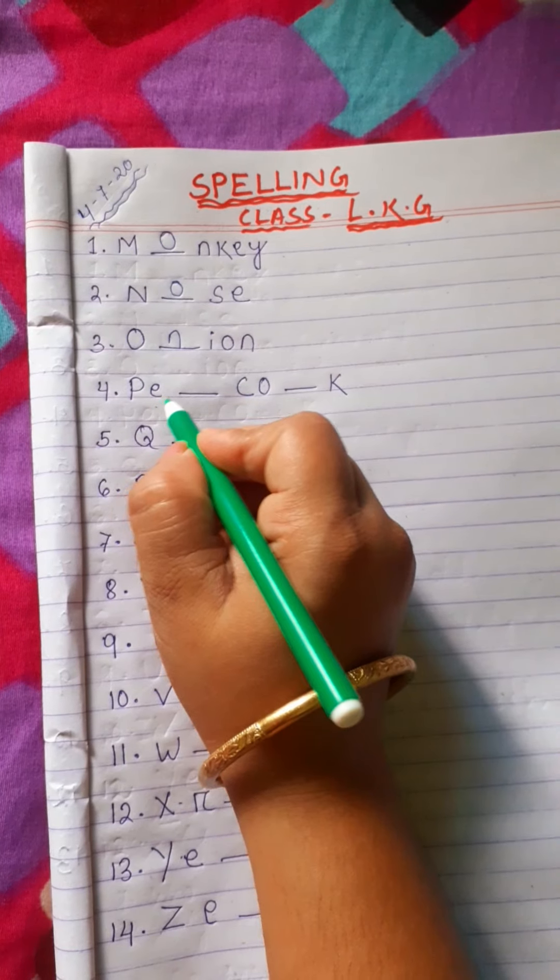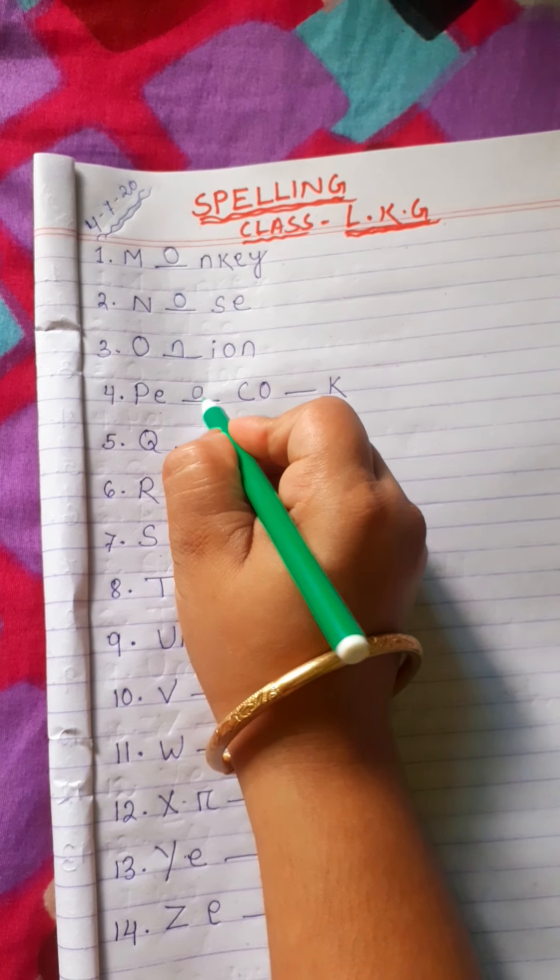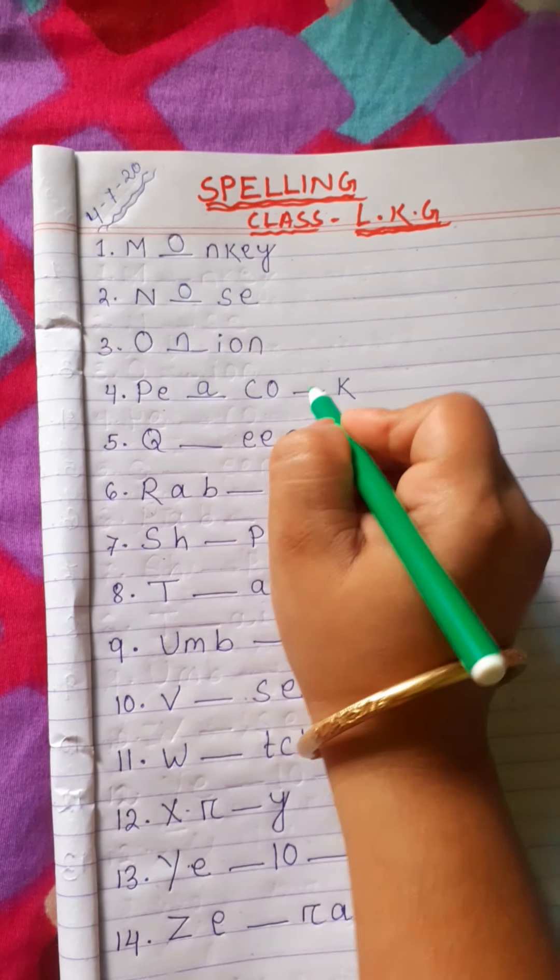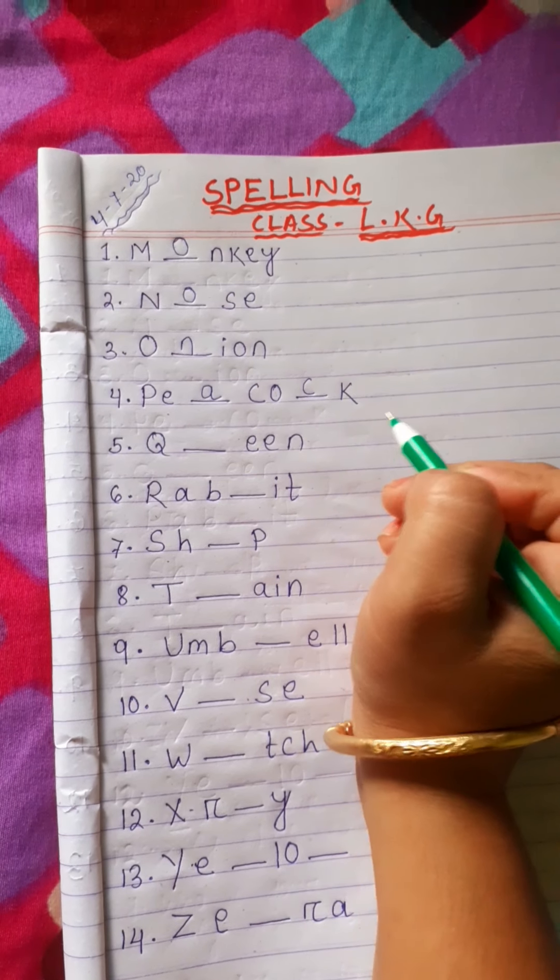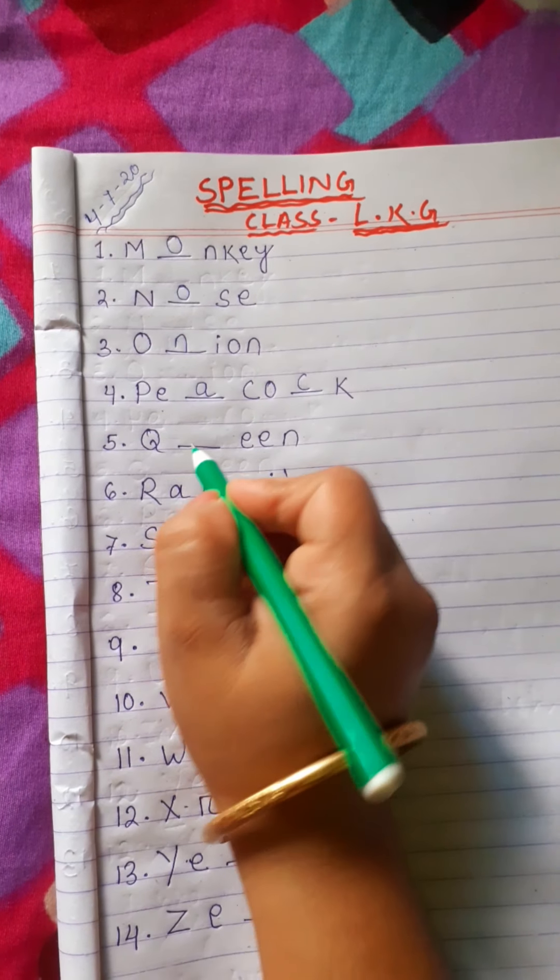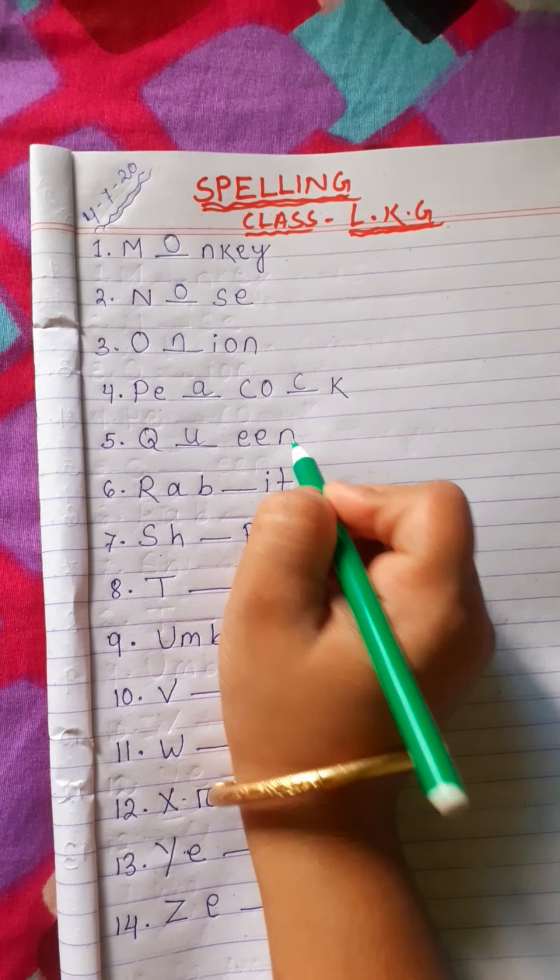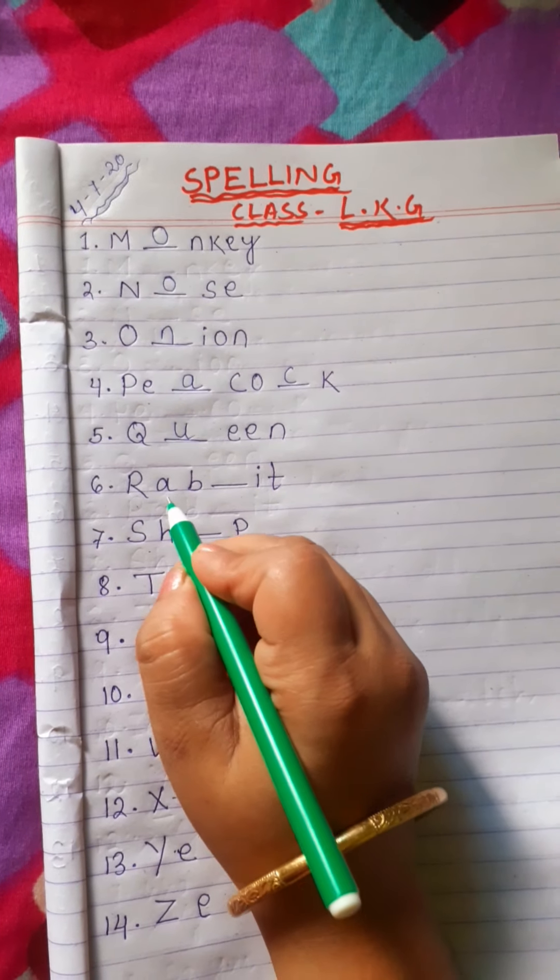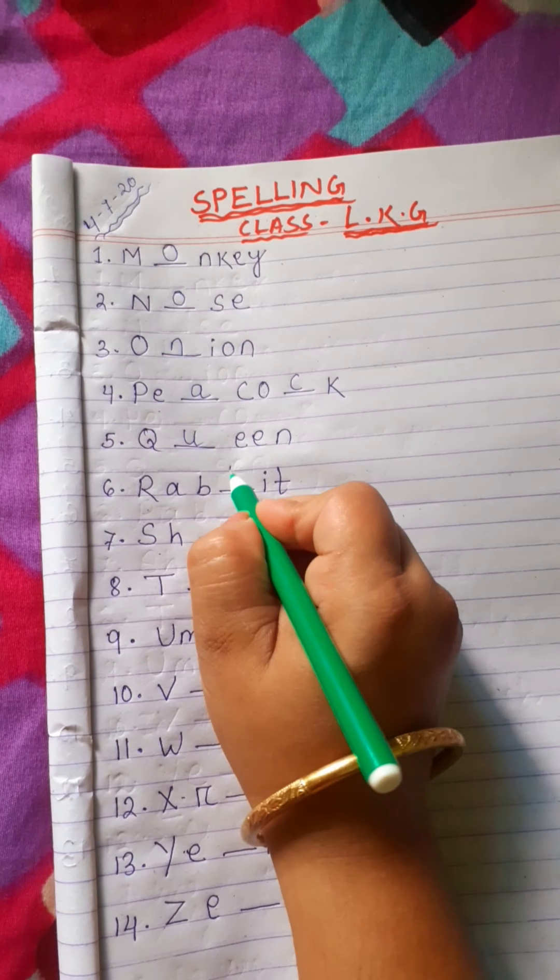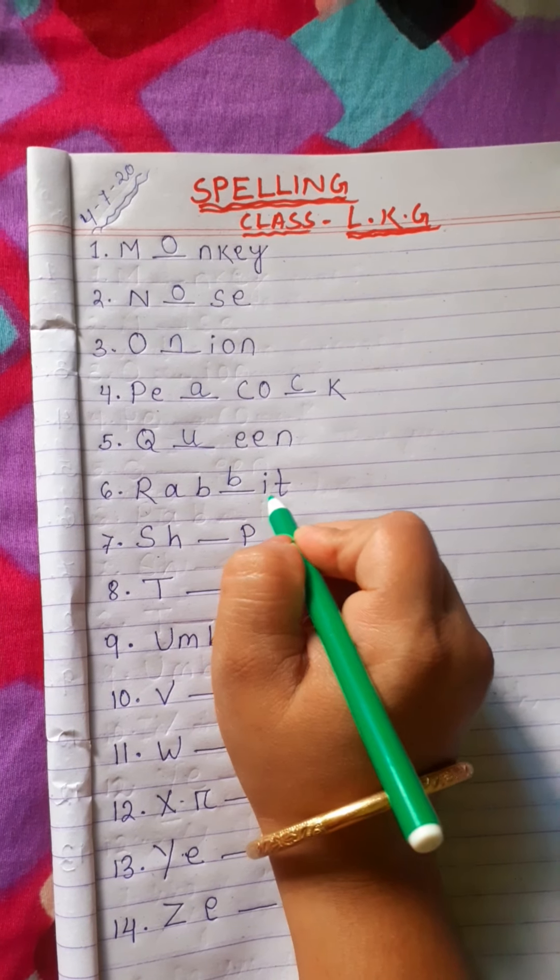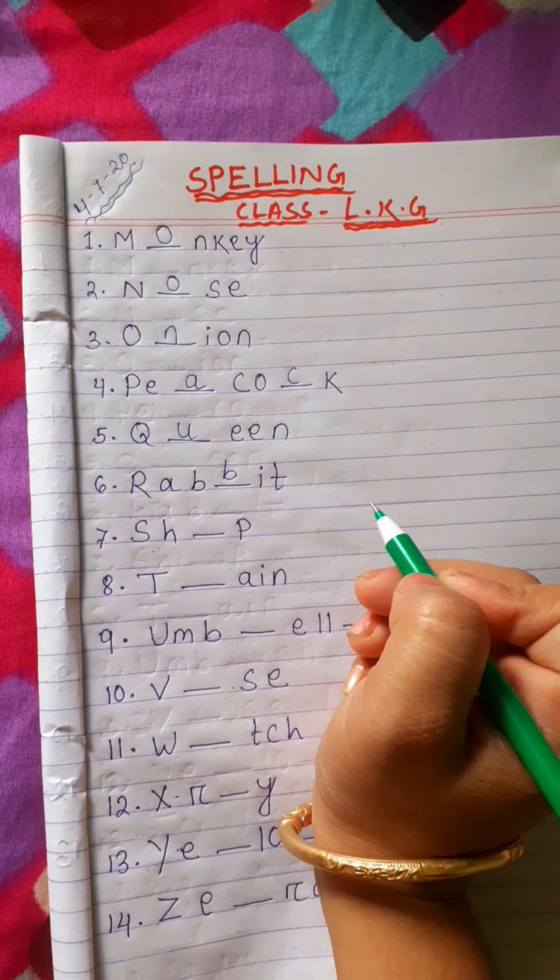P, E, A, C, O, C, K, Peacock. Q, U, E, E, N, Queen. R, A, B, B, I, T, Rabbit.